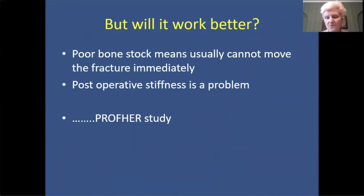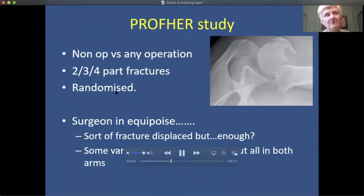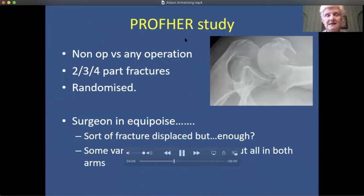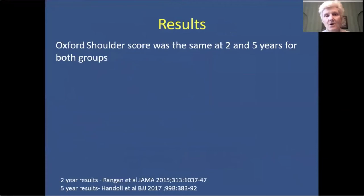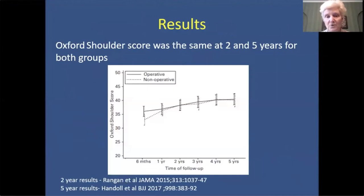Now I'm going to discuss the PROFHER study — a very important study. If you haven't read the paper, I encourage you to do so. It was a non-operative versus any operation randomised trial of two, three, and four-part fractures, done in hospitals in the UK. The surgeon had to be in equipoise — the fracture was displaced, but was it displaced enough to make a good difference? There was some variation between surgeons, but all surgeons entered patients into both arms, so that cancelled that out. The Oxford shoulder score was the same at two and five years for both groups. The two-year paper is published in JAMA and the five-year paper in the BJJ.